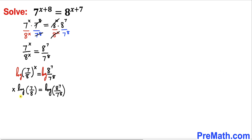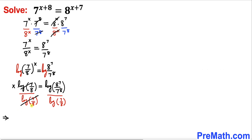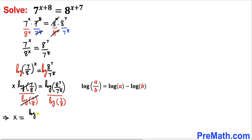To isolate x, we divide both sides by log(7/8), and the log terms on the left cancel out, leaving just x. Now applying the quotient rule to the numerator gives us log(8^7) minus log(7^8), and to the denominator gives us log 7 minus log 8.